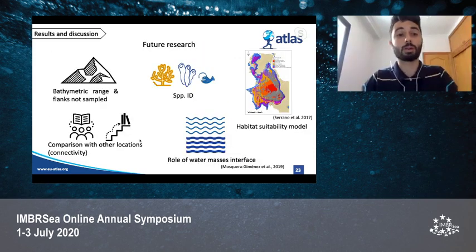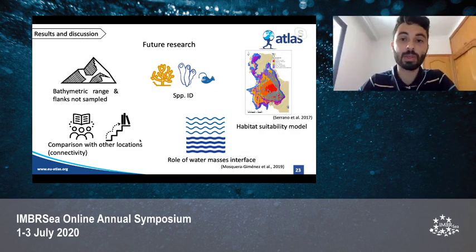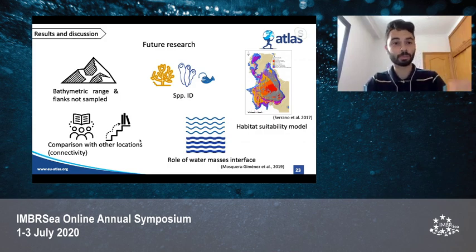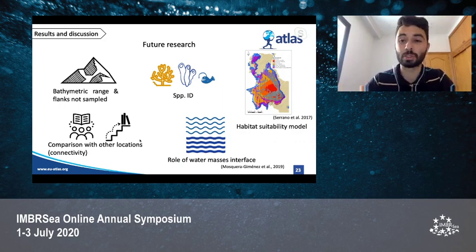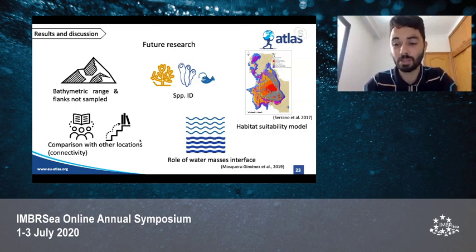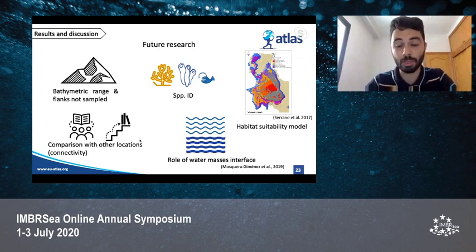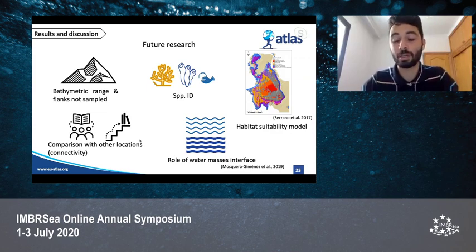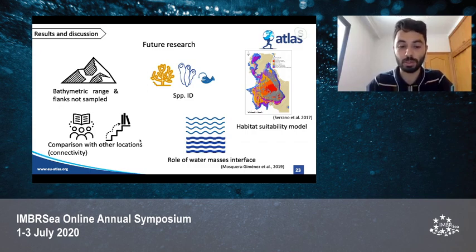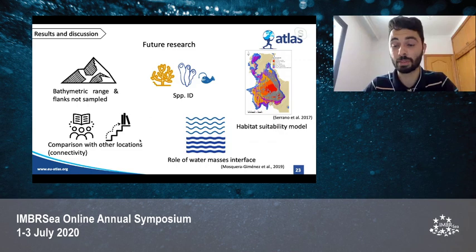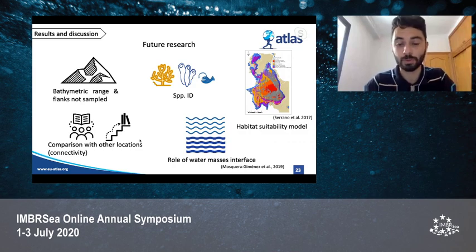As future research, there are still many knowledge gaps, like the bathymetric range and flanks not yet sampled, and species identification will improve in the future. With more information, habitat suitability models could be created to better understand the distribution of habitats along the seamount, enabling better management decisions. It would also be really interesting to compare with other locations to study connectivity and how these habitats may react to future climate change scenarios. The role of water mass interfaces has been hypothesized by Mosquera-Jiménez — that interfaces create internal waves beneficial for benthic filter feeders like sponges and corals — and similar trends could be happening here.